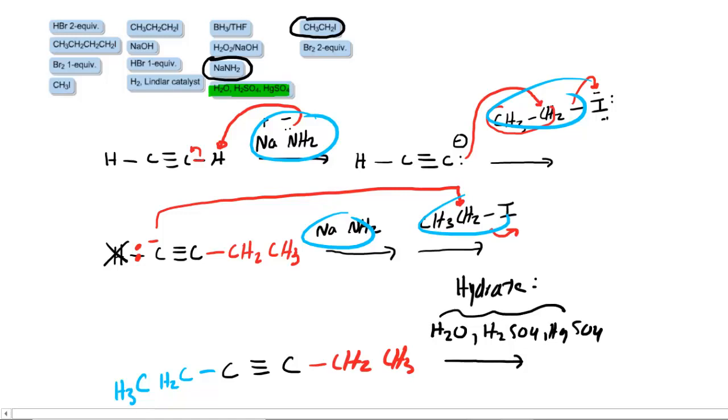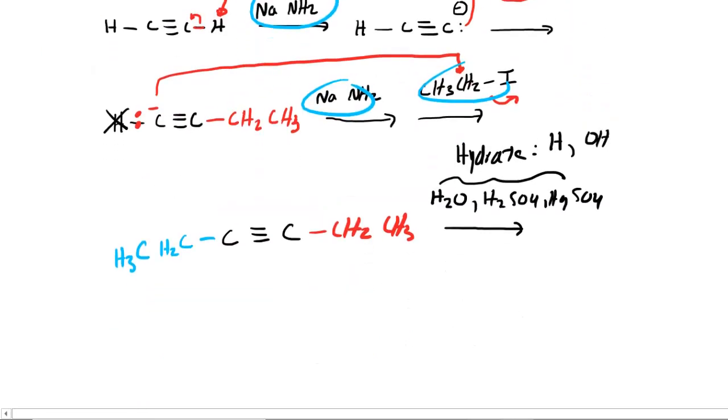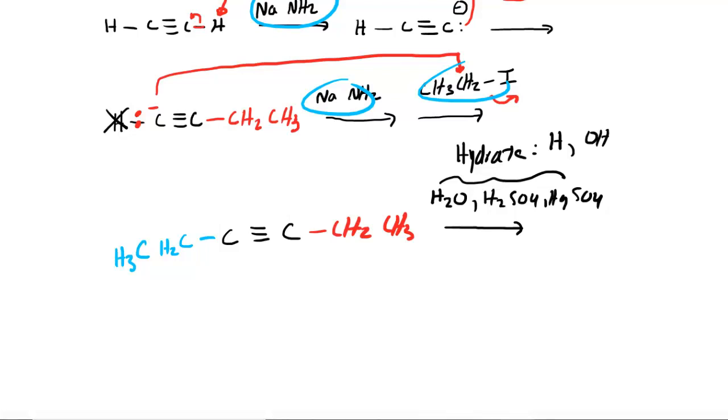These reagents are going to be used to hydrate a triple bond. Hydrate simply means to add a hydrogen at one carbon and an OH at the other carbon of the triple bond. In this case, we have a symmetrical alkyne, which is very important to understand. It doesn't really matter whether we add the hydrogen to this carbon and the OH to that carbon or vice versa, because this is a symmetrical alkyne.